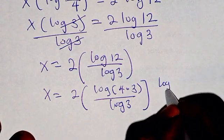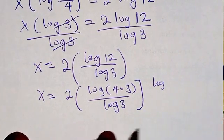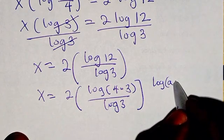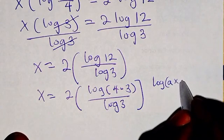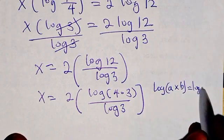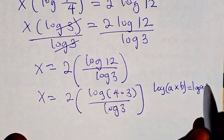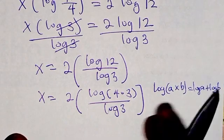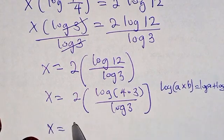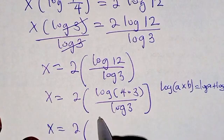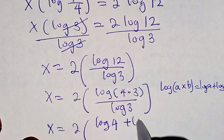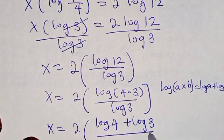From the law of logarithm, when you have log a multiplied by b, this gives us log a plus log b. We apply the same thing here, giving x equals 2 times the bracket log 4 plus log 3, all divided by log 3.